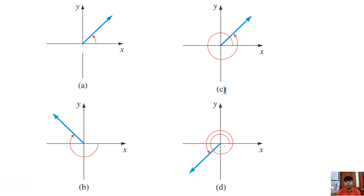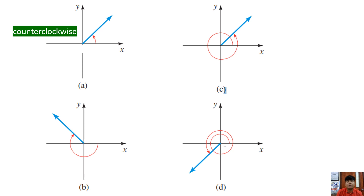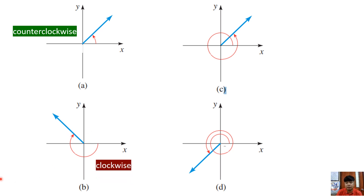Here we have four graphs. Observe the first graph — the movement is counterclockwise and it started from the positive x-axis, so that is considered an angle in standard position. Next, you see that this one also started from the positive x-axis but it moves clockwise, so it provides a negative angle.